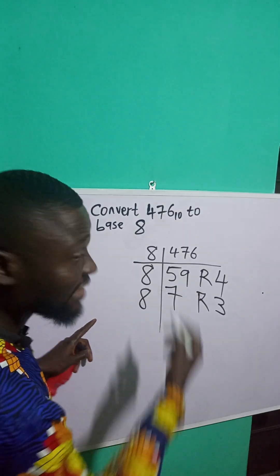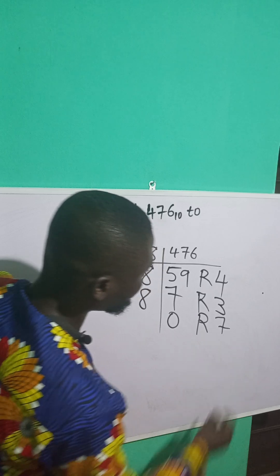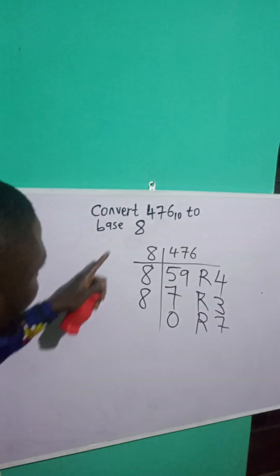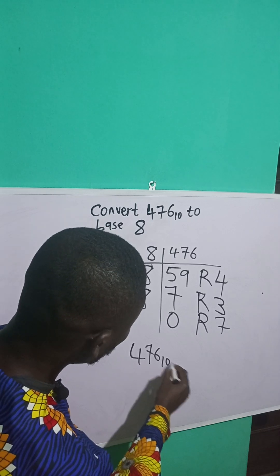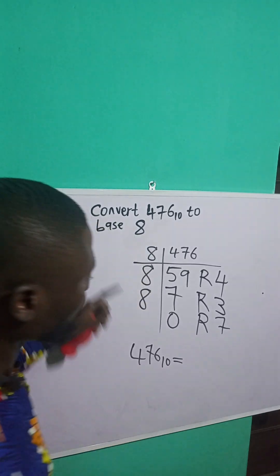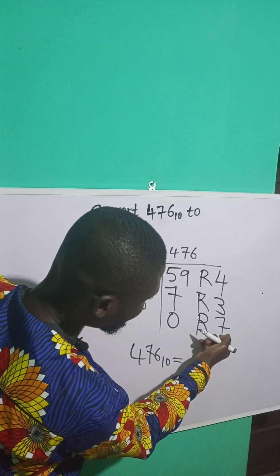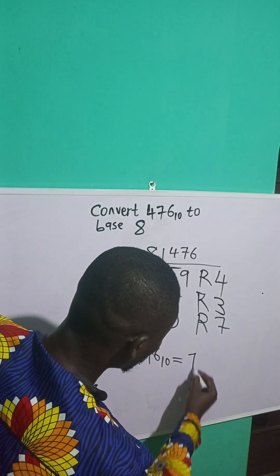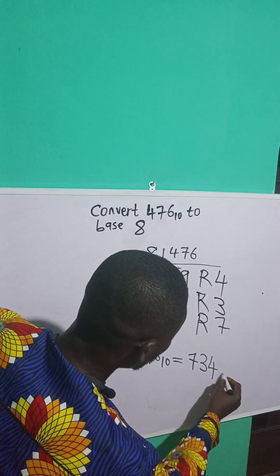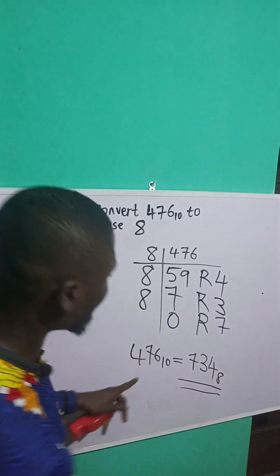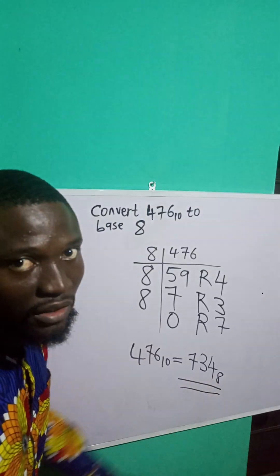Now, 8 divide 7 — it cannot go, so it will be 0, remainder 7. Therefore, 476 base 10 is equal to what? You count from here. From there we get 734. It is equal to 734 base 8. If you convert 476 from base 10 to base 8, this is what you are going to get: 734.